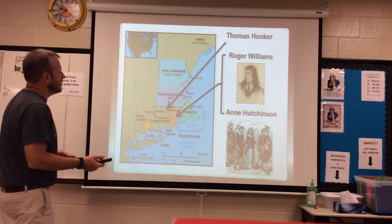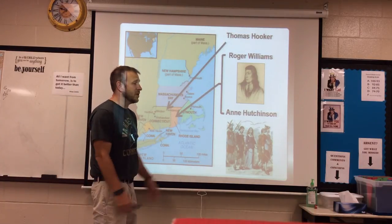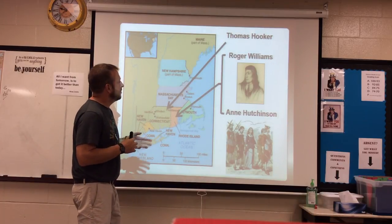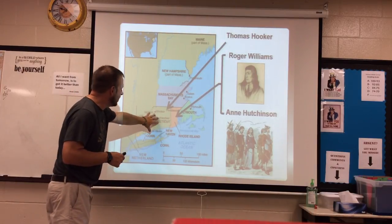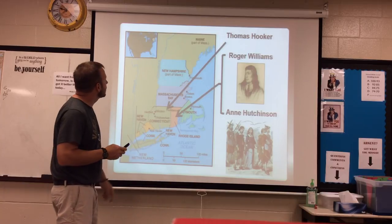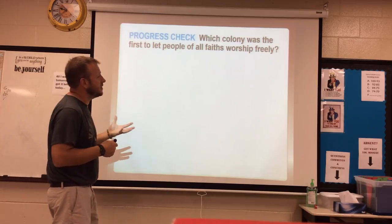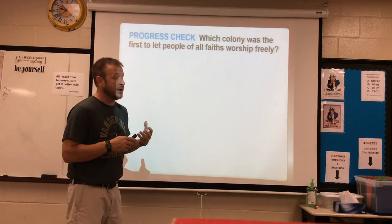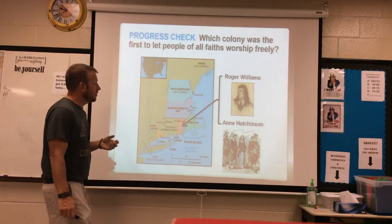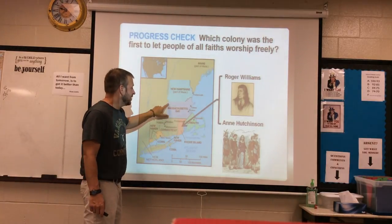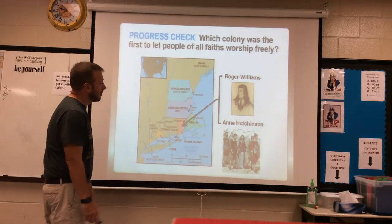Roger Williams and Ann Hutchinson — Ann got in trouble for holding Bible meetings in her house and speaking her mind on how things should be. They didn't much like that, so she went and helped with Rhode Island. Thomas Hooker was one of the main players for Connecticut. Rhode Island was the first colony where all faiths could worship freely — Roger Williams had been in Massachusetts Bay, they didn't like his thoughts, so he said fine and went down to Rhode Island to start his own.